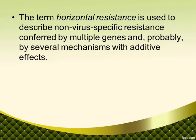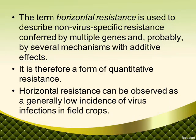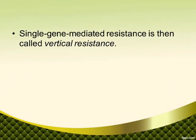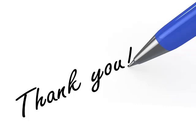The term horizontal resistance is used to describe non-virus-specific resistance conferred by multiple genes and probably by several mechanisms with additive effects; it is therefore a form of quantitative resistance. Horizontal resistance can be observed as a generally low incidence of virus infections in field crops. Single gene-mediated resistance is then called vertical resistance. Protection against virus infections in the field is often the result of both types of resistance — horizontal and vertical — operating simultaneously. Thank you for watching the video.